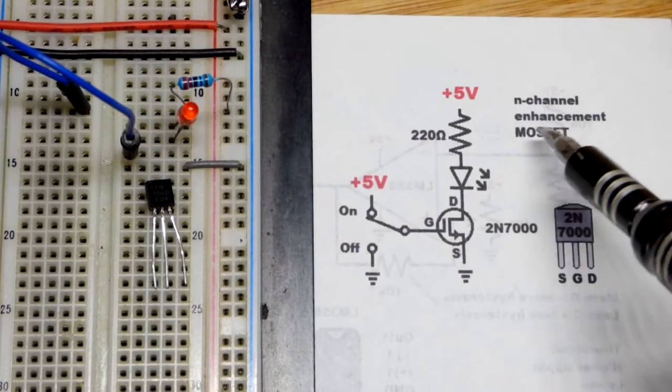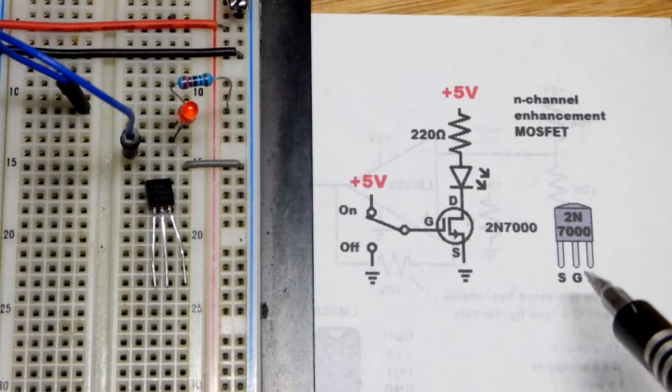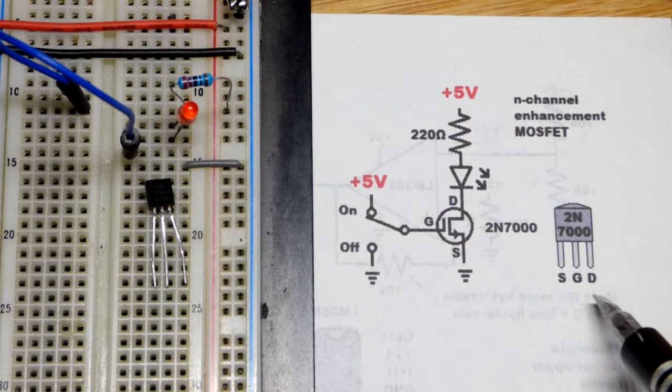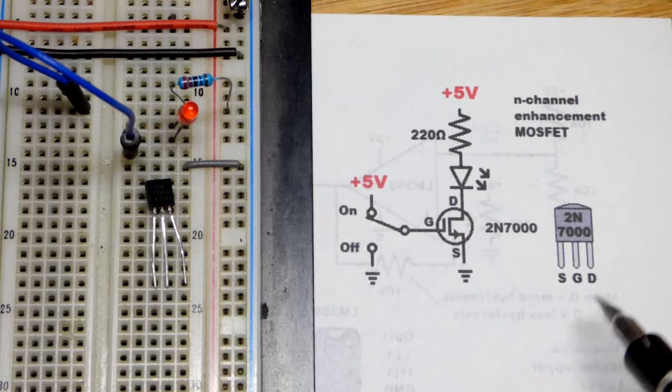Now in this video we're going to introduce the N-channel enhancement mode MOSFET to this video series. I'm using the 2N7000 right there. There you can see the pin layout.